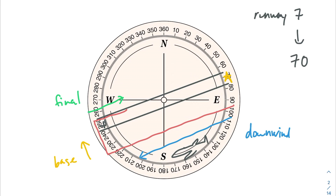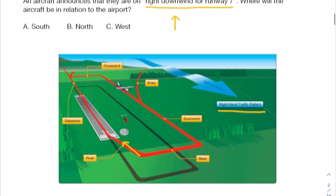Our plane is in the downwind leg, so it's here, flying in this direction. Now we have everything we need to solve the problem. The plane is currently somewhere within this downwind leg, and we're asked where it is relative to the airport. We draw our little compass and say that the airplane is south of the airport, because it's on that downwind leg and we're turning right.